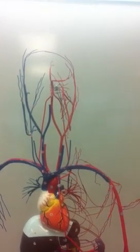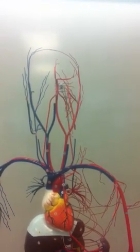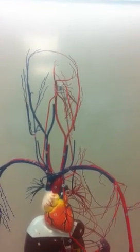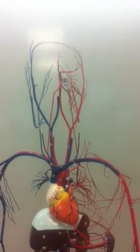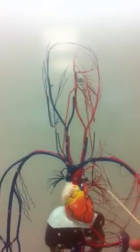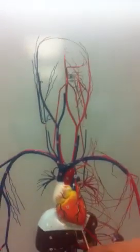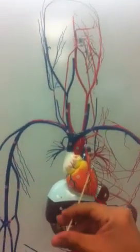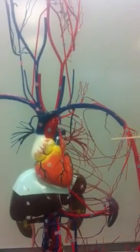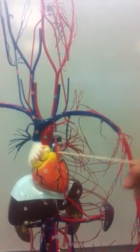We will now be discussing the cardiovascular system, and as you can see with this model, it's showing you the blood vessels. We'll start over here with the heart, and we can see two important blood vessels that originate from the heart.